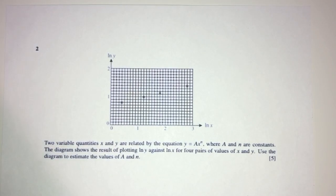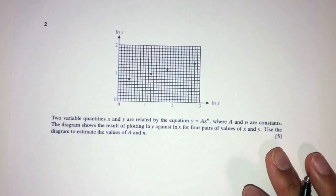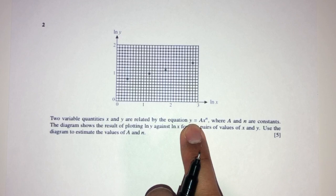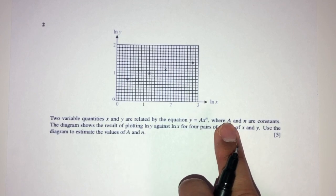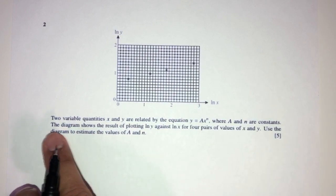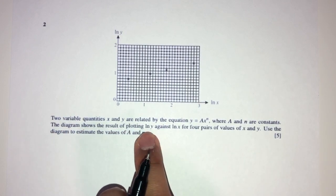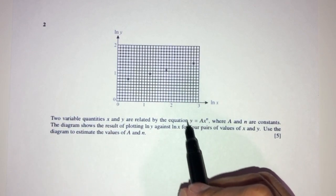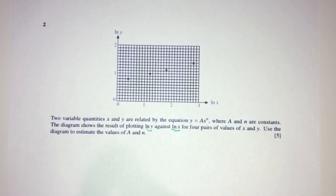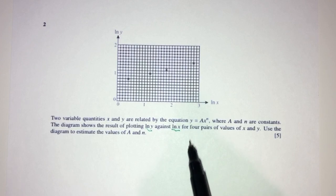Now let's move on to question number 2. So here we have 2 variables, X and Y, are related by this equation. So Y equal to AX power N, where A and N are constants. Now, the diagram shows the results of plotting ln of Y. So we have this equation at first, but we are plotting ln of Y against ln of X for 4 pairs of values of X and Y.